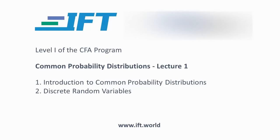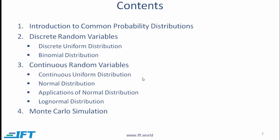Common Probability Distributions. In this reading, we'll talk about common probability distributions such as the discrete uniform distribution, binomial distribution, and then continuous random variables where we will cover the continuous uniform distribution, the normal distribution — perhaps the most important of all — its applications, the log normal distribution, and at a high level, the Monte Carlo simulation.